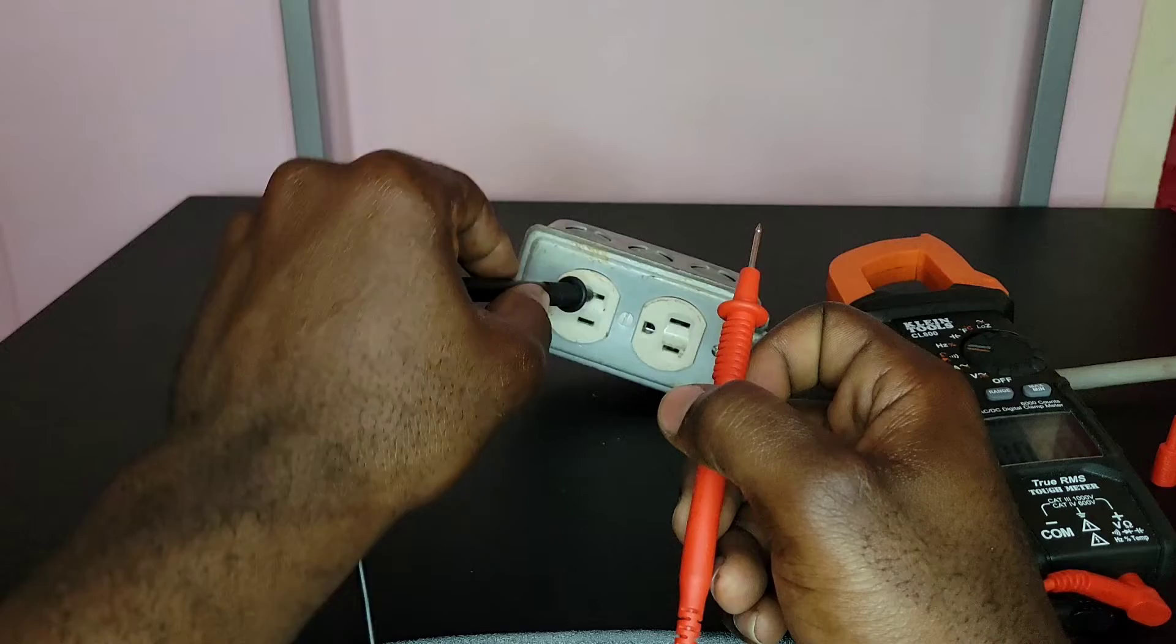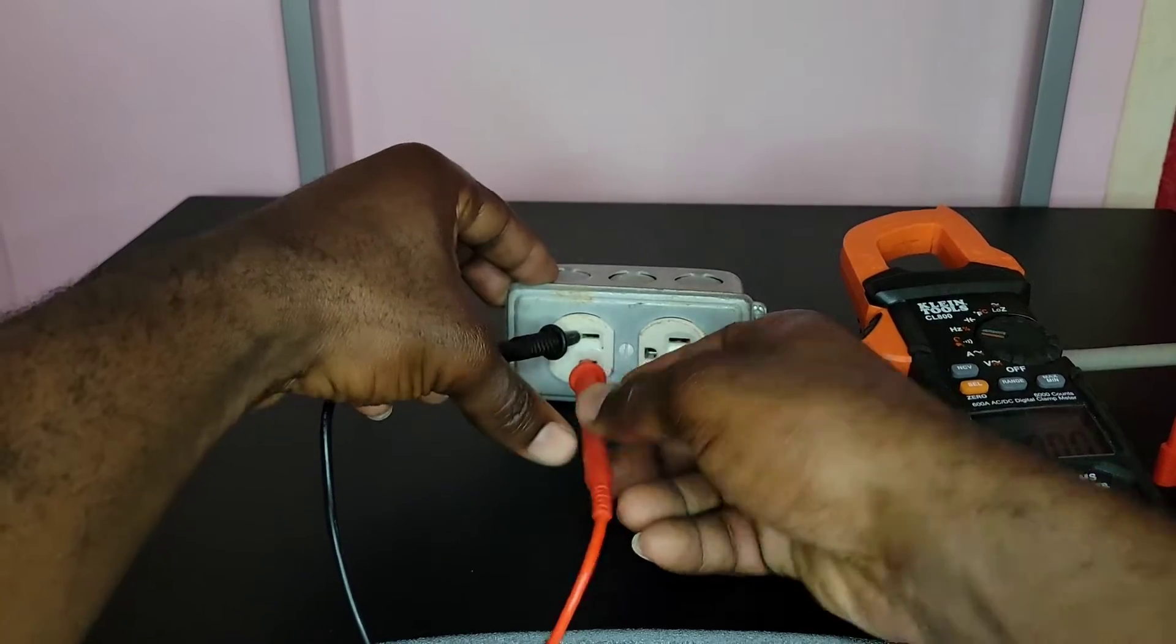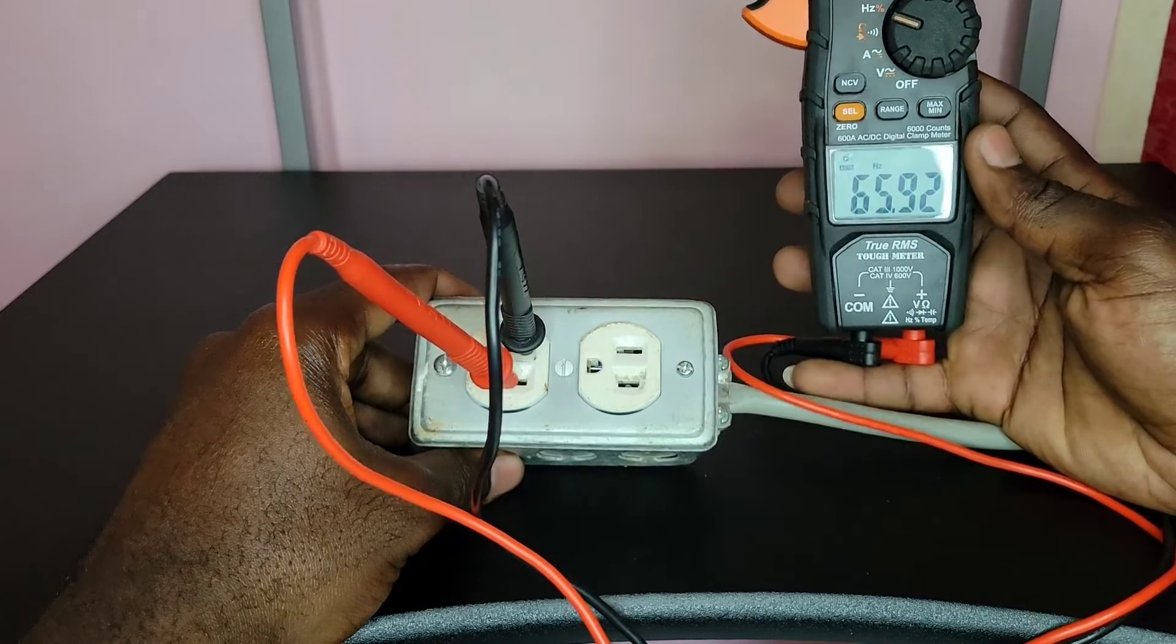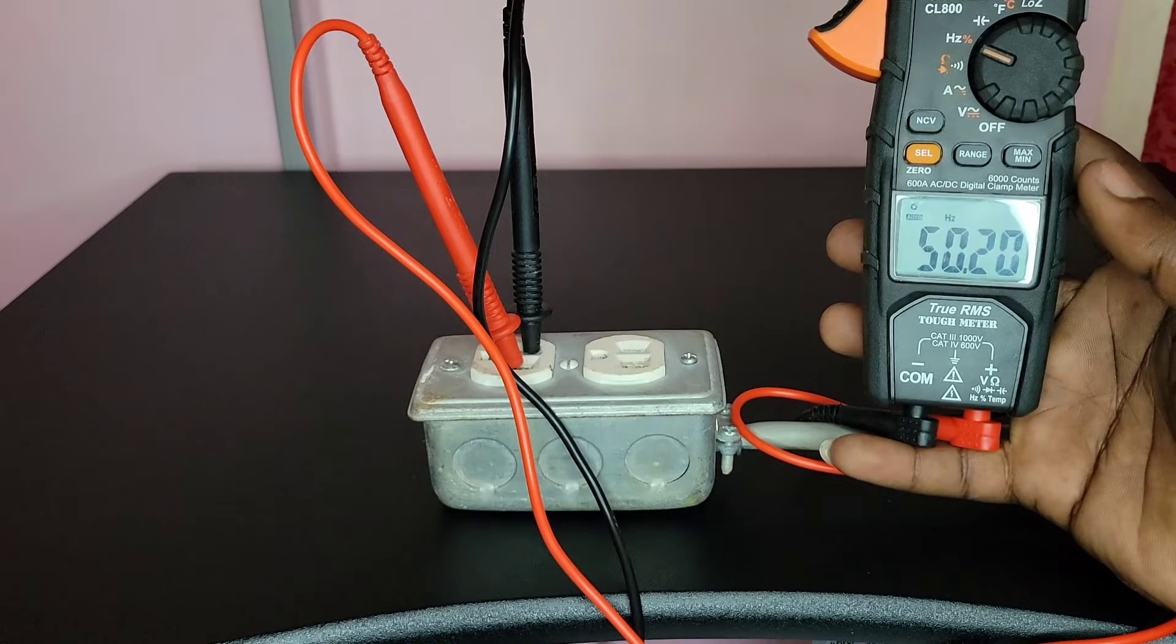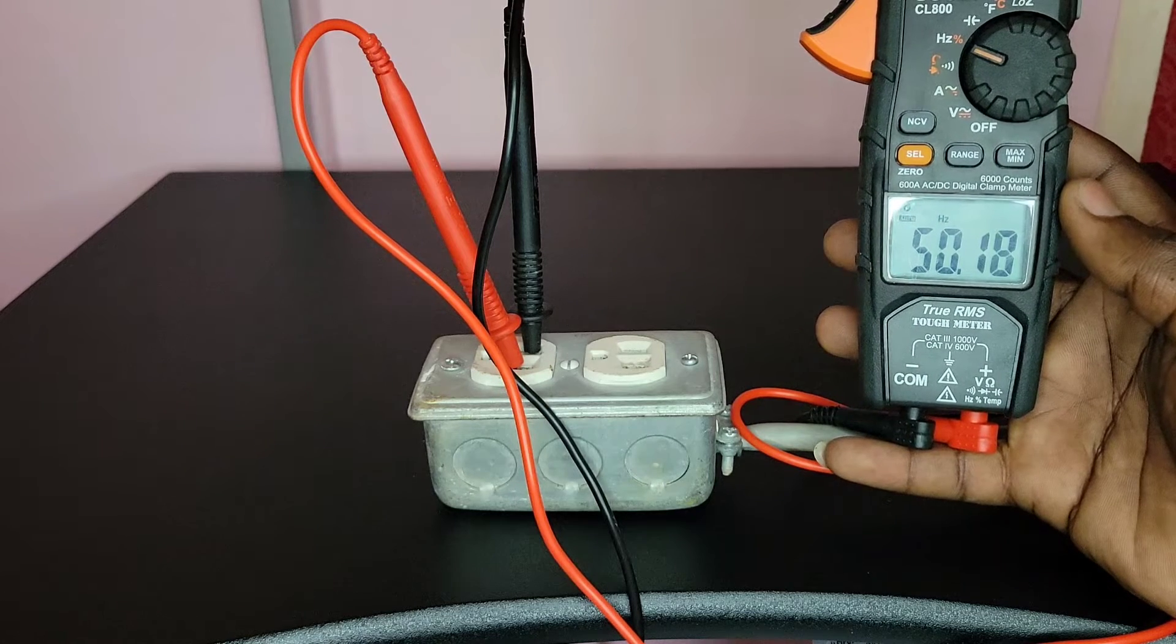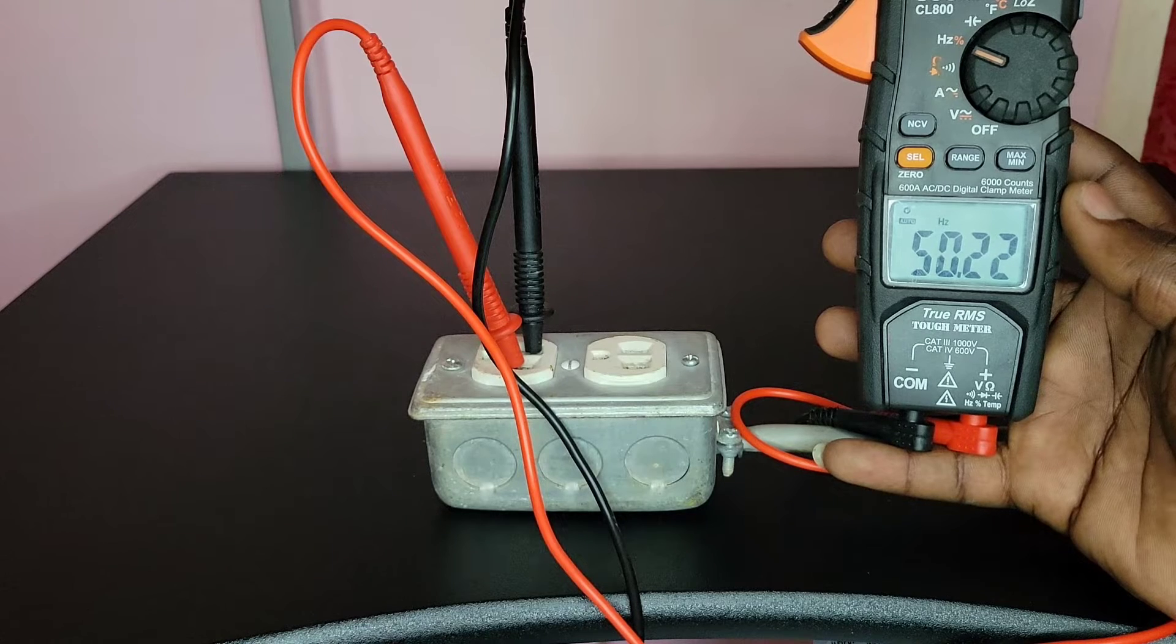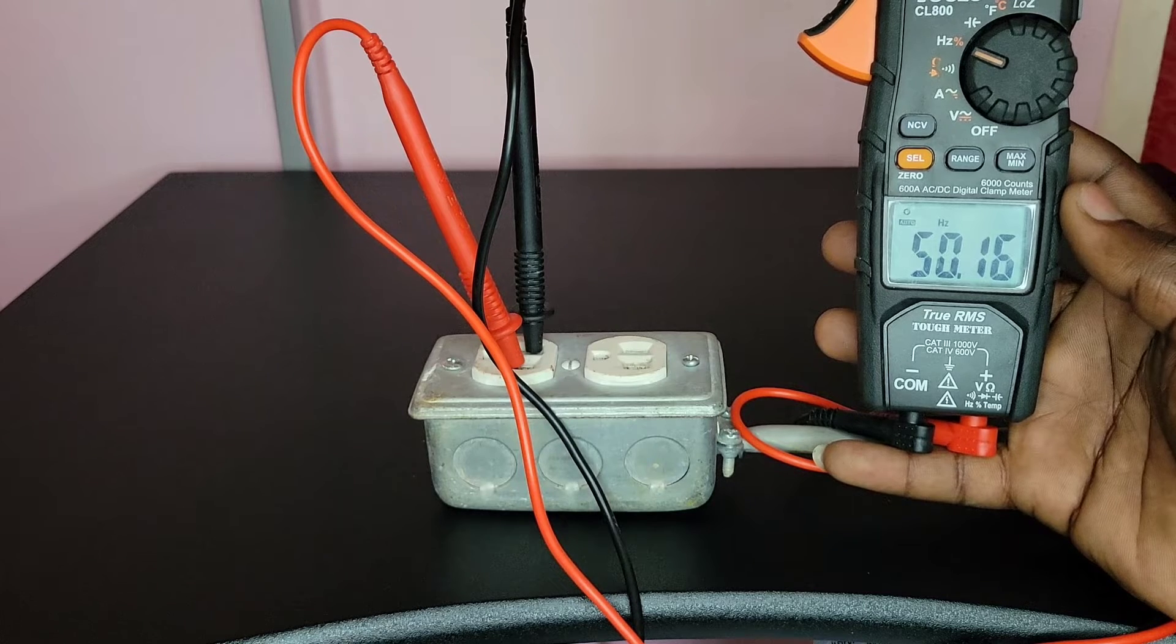This one is our negative, so we insert. This one is our positive, we insert. So one in the positive, one in the negative. And this is the reading that I'm expecting to get because I'm currently recording this video in Jamaica, and frequency in Jamaica is 50 Hertz. Sometimes it's going to fluctuate. You're going to wait until the reading is relatively constant.